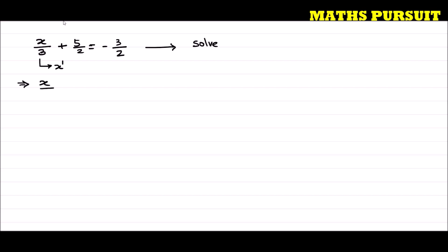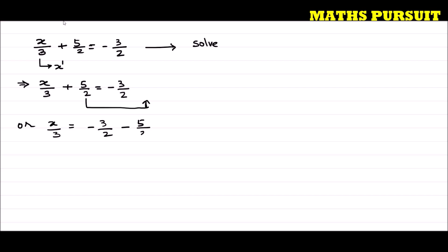The given expression is x upon 3 plus 5 upon 2 is equal to minus 3 upon 2. Let us move 5 upon 2 to the right side. So I can write x upon 3 is equal to minus 3 upon 2 minus 5 upon 2. Why minus? Because here we have plus 5 upon 2, and when it moves to the right hand side it becomes minus 5 upon 2.